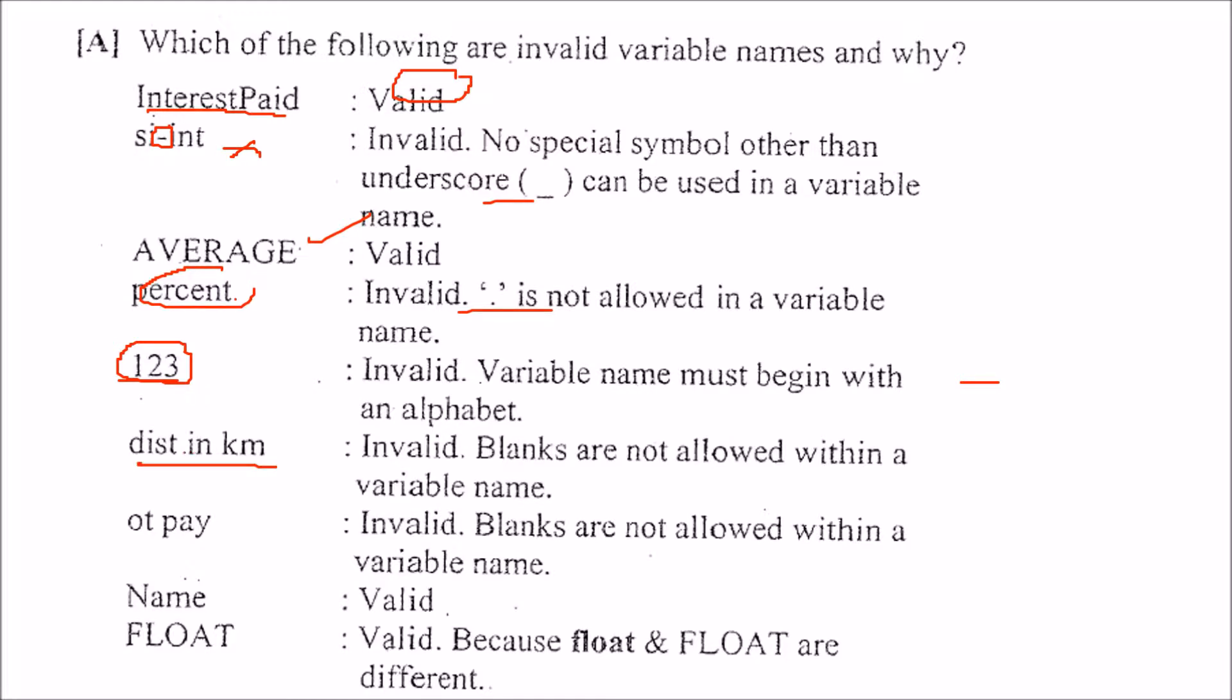dist in kf, because there are blank spaces here, it is not allowed. otp again being blank space, name it is valid. And float, now this is valid or invalid. Since float, small, this one is the lower case and this is being seen by the compiler. But this is not being seen, the capital float can be allowed.